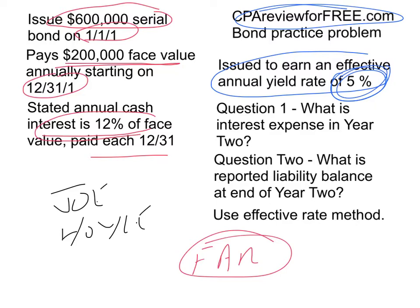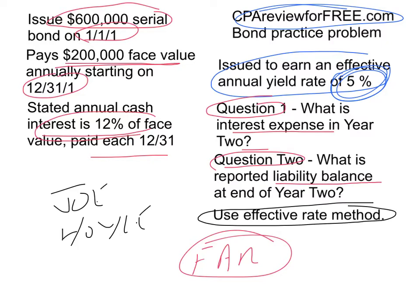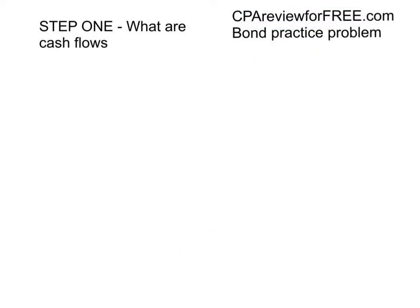On the CPA exam, or again in intermediate accounting, you face two possible questions. Question one: what is the interest expense for year two? Question two: when you report your balance sheet at the end of year two, what is the liability balance? On the CPA exam, almost all of these questions use the effective rate method, which is the preferable method, and that's exactly what we're going to use.